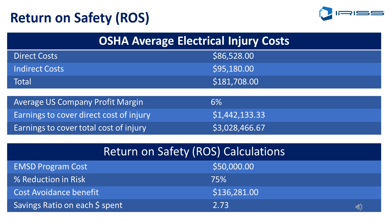Investing in safety can provide a quick return. OSHA has an online calculator tool that, depending on the type of injury, can help you calculate the true costs both direct and indirect. The average U.S. company's profit margin is approximately 6%, and for electrical injuries that means it would take over three million dollars in incremental sales to cover the cost of an injury. Investing in an electrical safety program like the use of Electrical Maintenance Safety Devices can have a very quick return on your investment.